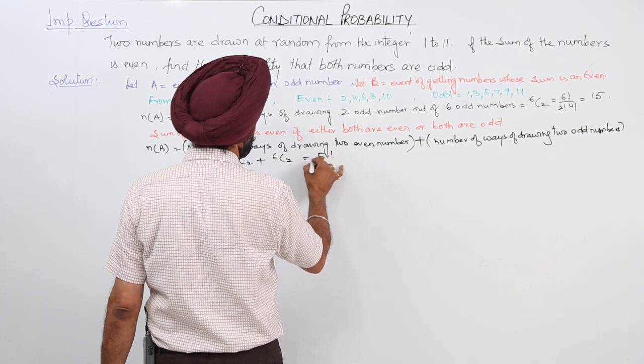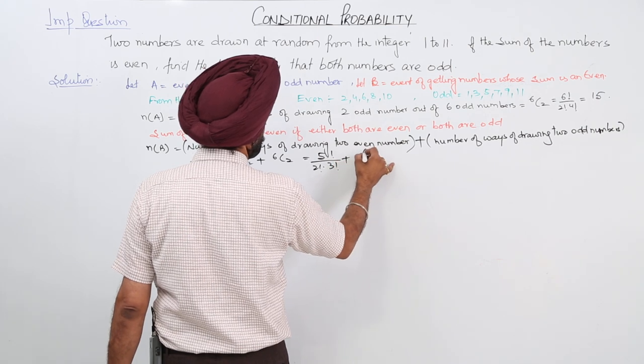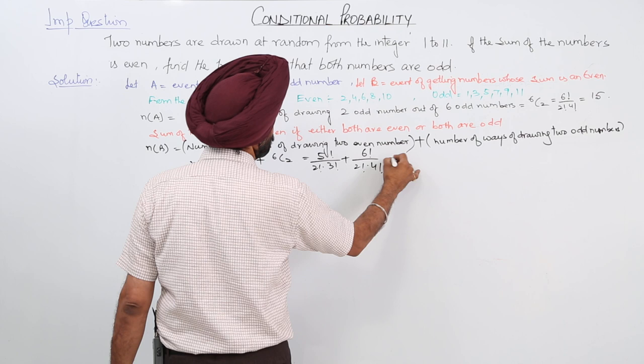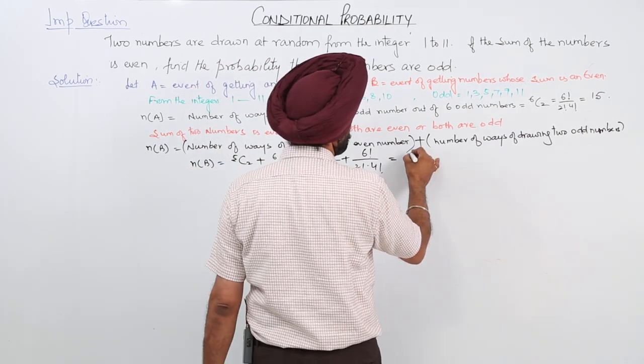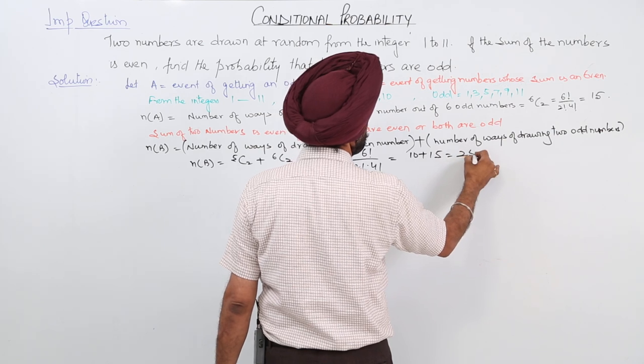Now this is equal to 10 plus 15 is equal to 25.